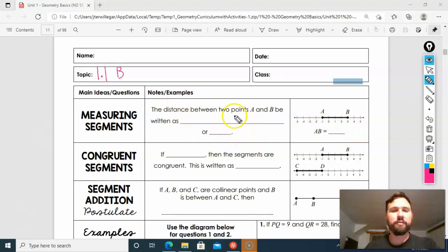And that is true with a number line as well. So the distance between two points A and B can be written as the length of AB. Alright, I'll make it work.